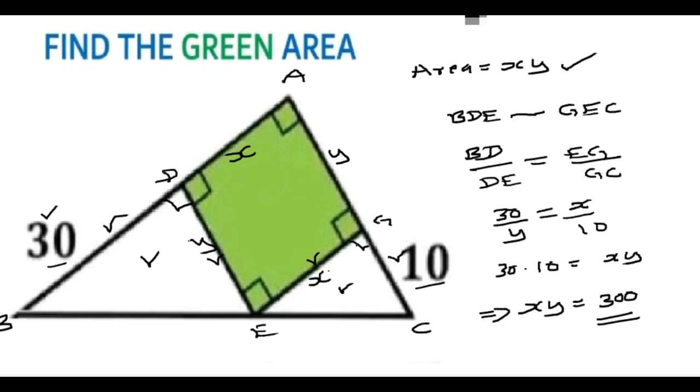You can see the area was XY, so that implies XY equals 30 times 10, which is 300 unit square. We've used the concept of congruence to determine the area of the green region. Thank you for watching and don't forget to click the next video.